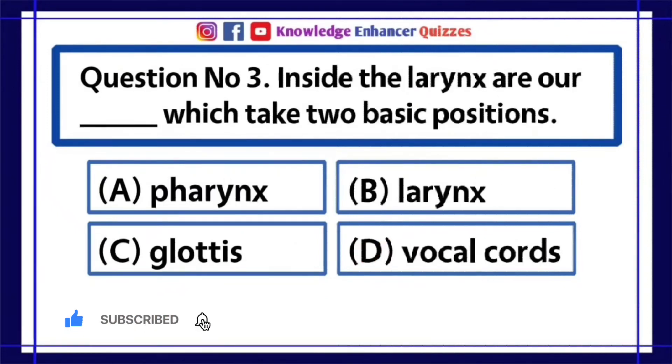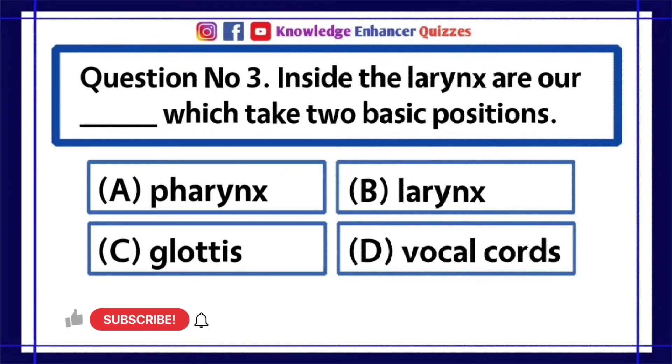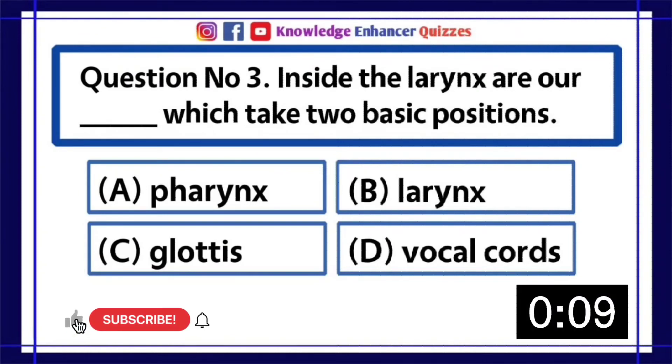Question number 3. Inside the larynx are our dash, which take two basic positions. A. Pharynx. B. Larynx. C. Glottis. D. Vocal cords.